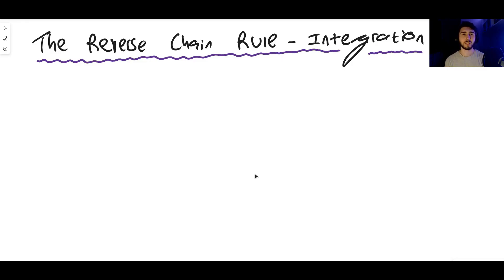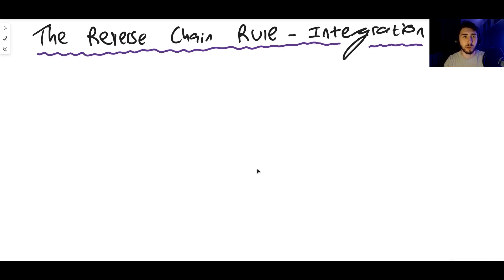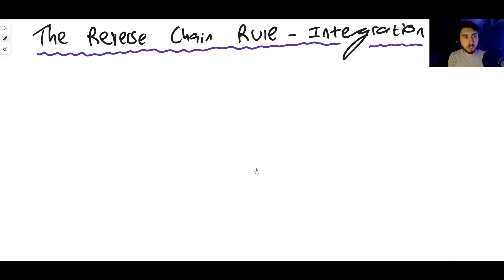Hello there guys and welcome back to another Epic InX Rule of Maths video. In this video we are looking at the reverse chain rule, which is an integration technique - a method for integration. This is related to the chain rule; it's just the reverse of it. The chain rule is a differentiation method and integration is the opposite of differentiation, so the reverse chain rule has something to do with integration.